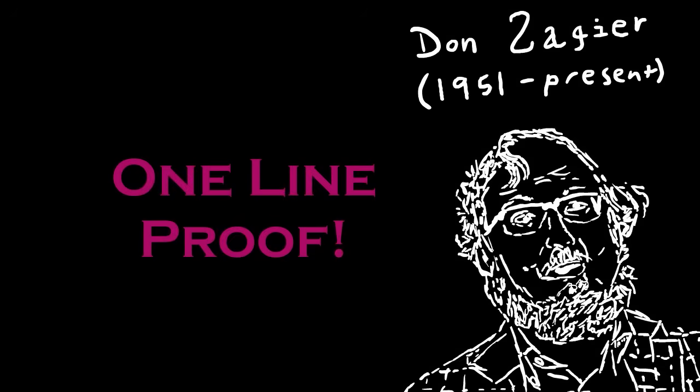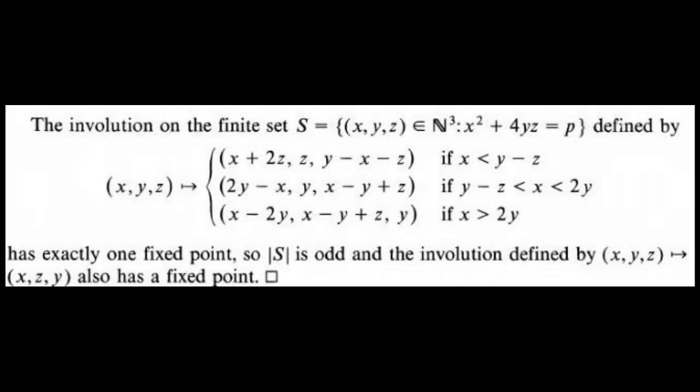One of the most beautiful proofs of Fermat's two squares theorem is a one-line proof by Don Zagier. Unfortunately, when you look at it for the first time, you may wonder where to even begin. However, by considering each part of the proof separately, it all comes together beautifully at the end.